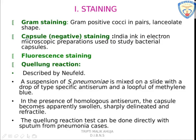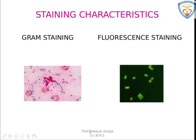Fluorescent staining uses a fluorescent dye. The Quellung reaction is a characteristic reaction for S. pneumoniae, first described by Neufeld. It can be carried out on S. pneumoniae culture or on a sputum sample. On a glass slide, the culture or sputum sample is taken, to which a drop of antiserum and then methylene blue are added. In the presence of antiserum, the capsule becomes sharp — this is a positive Quellung reaction.